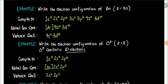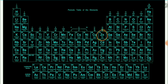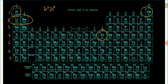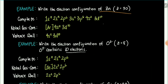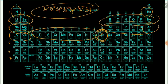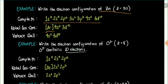Now let's look at some examples. For zinc: 1s2, 2s2, 2p6, 3s2, 3p6, 4s2, 3d10. That is the full electron configuration for zinc. For the noble gas core configuration, the last noble gas before zinc is argon, so we write [Ar] 4s2 3d10. The valence shell electron configuration is 4s2 3d10.